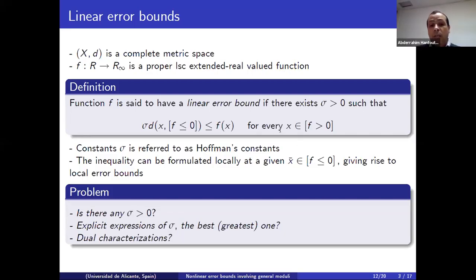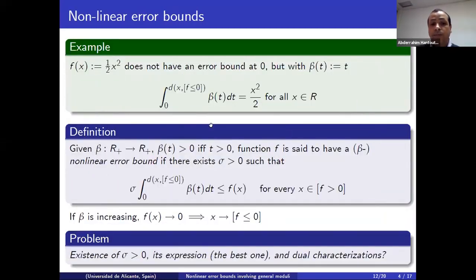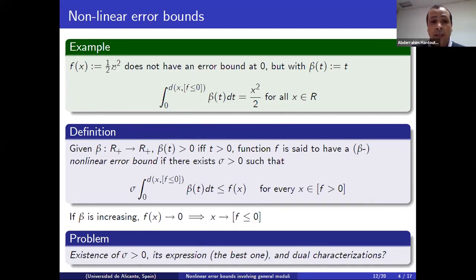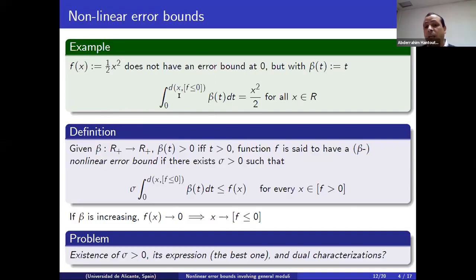This is just linear. So here we speak on linear error bound. Let us examine this function — this is the simplest one in analysis, the square function. This doesn't satisfy this error bound because it is very flat near zero.